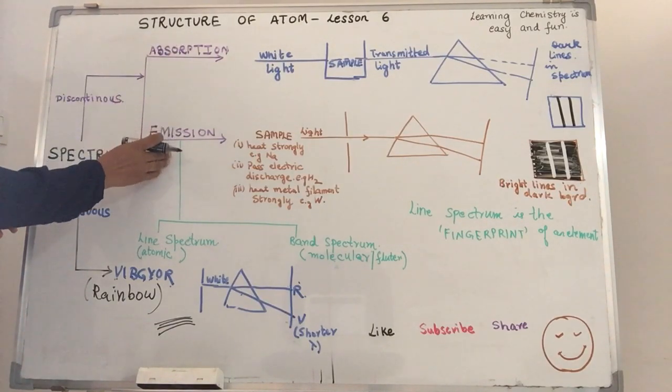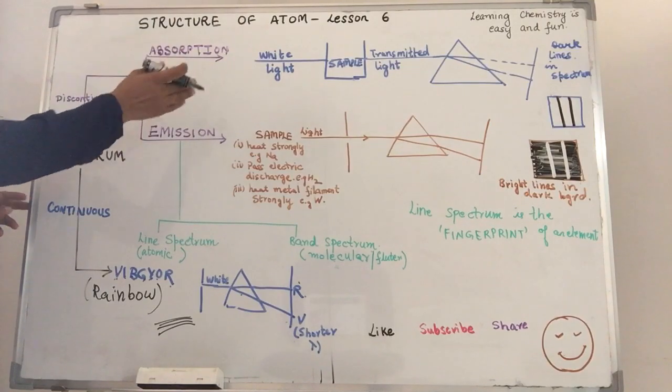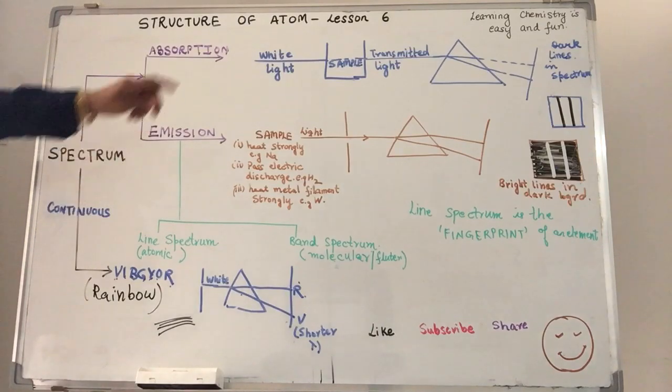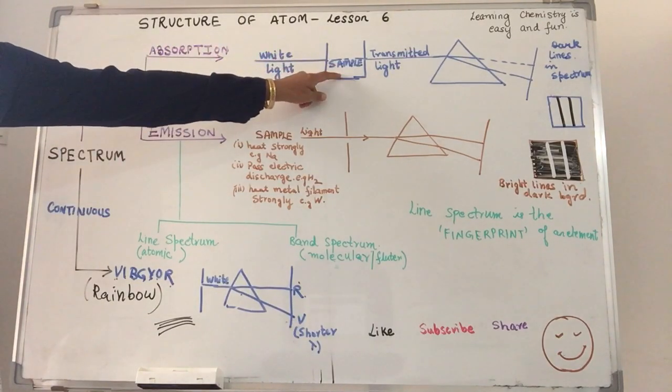This Discontinuous Spectrum has been divided into two types to make it simpler for understanding: Absorption Spectrum and Emission Spectrum. First let us see what is absorption spectrum. As the name indicates, absorption spectrum means what part of the spectrum has been absorbed. So what we have is white light here, I pass it through the sample.